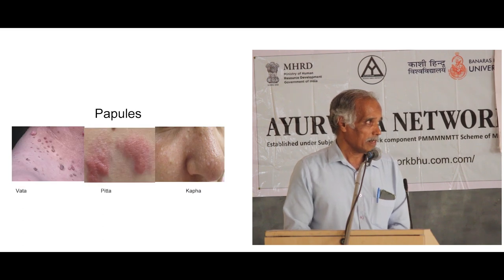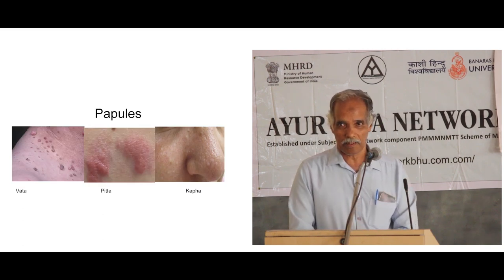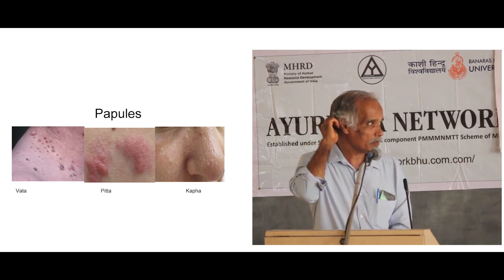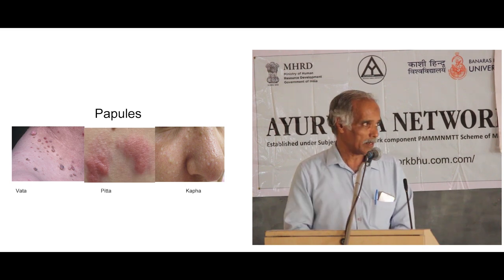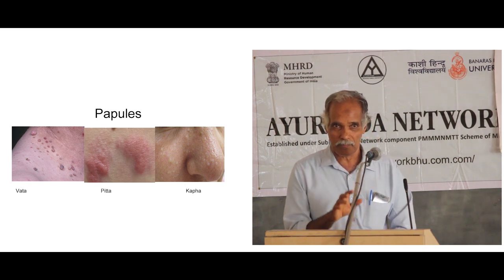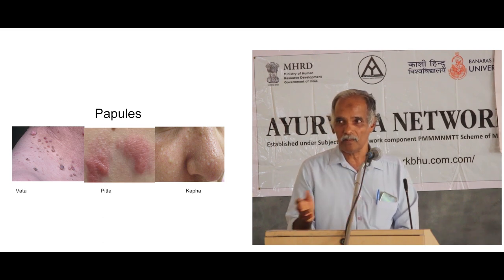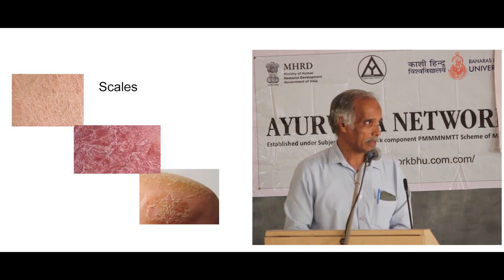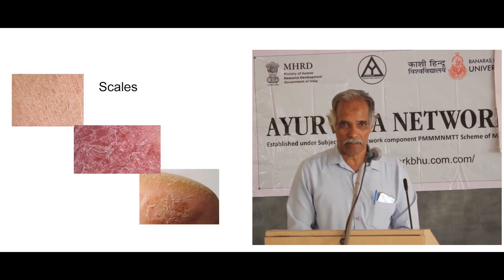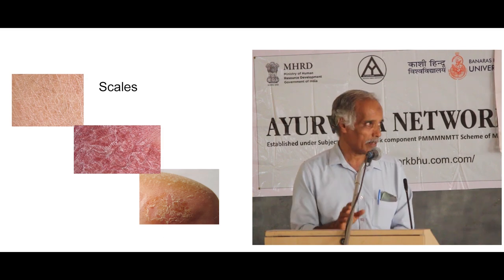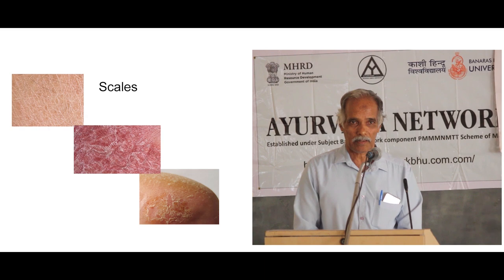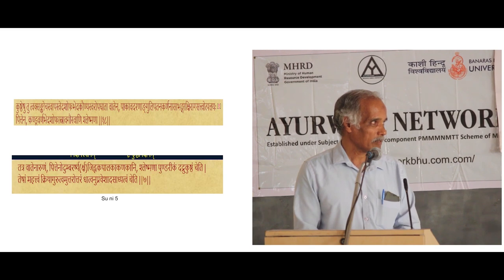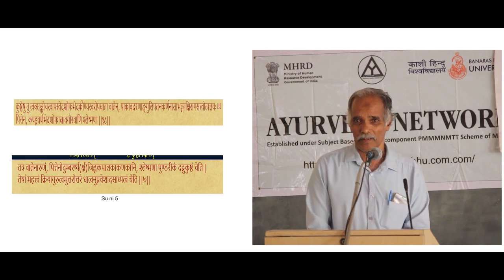Similarly with papules — a local raised lesion. When the surface is slightly raised, Uttanna, and the distribution is haphazard and irregular, again based upon colour and appearance, we can assess Vata, Pitta, or Kapha. Likewise for a scale lesion — based upon colour and appearance we assess the dosha. Once we have made this assessment, the whole management is relatively simple, and the same is described in the text.